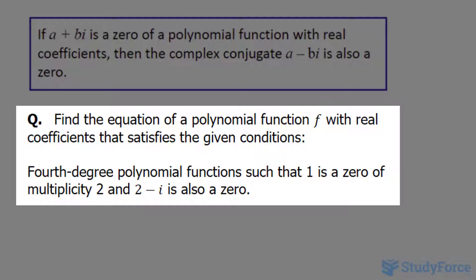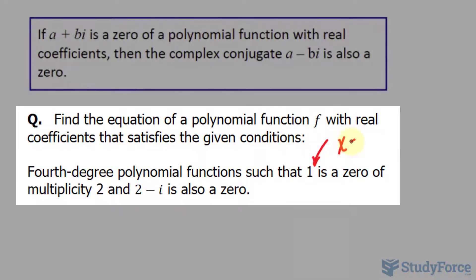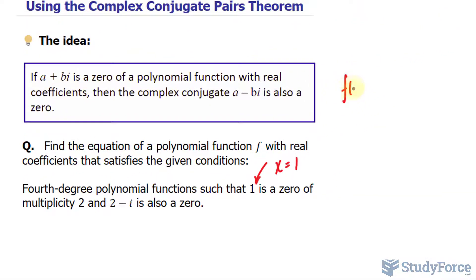It's a fourth degree polynomial function such that one is a zero of multiplicity two. So we have a zero that's x equals one, and that can be written as x minus one raised to the power of two. The reason why I'm raising it to the power of two is because it has a multiplicity of two, meaning that it repeats itself.